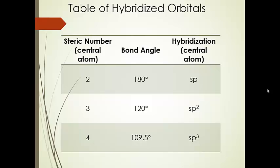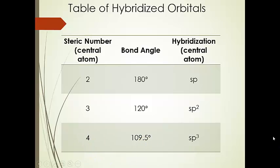Here's our table of hybridized orbitals. The steric number and corresponding bond angle should already be memorized. When the steric number is 2, you have sp hybrid orbitals. When the steric number is 3 with 120-degree bond angles, you have sp2 hybrid orbitals — you mix 3 atomic orbitals to get 3 hybrids back out. For steric number 4, bond angles are 109.5 degrees, and you mix the 2s plus all three 2p orbitals to get the set of sp3 hybrid orbitals.